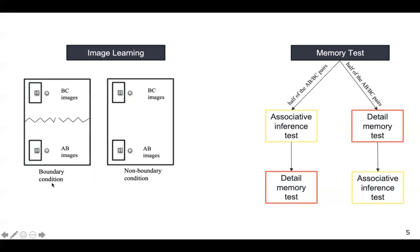We manipulated the boundary condition by using a portable screen in the middle of the room so that participants assigned to the boundary condition have to walk through a door in the middle of the room between their AB and BC images encoding.